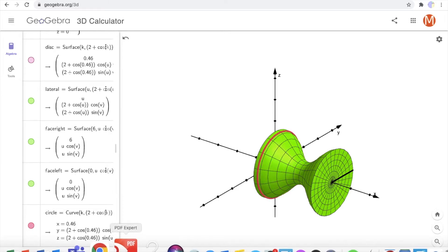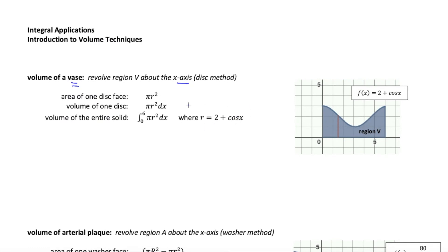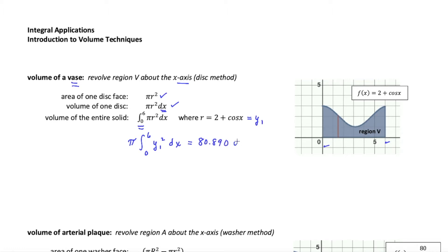Going back to the two-dimensional region, let's set up an integral for its volume. Here is one circular face, and when you give that face some thickness with dx, you have the volume of one disk. Integrating adds up all those volumes — there's an infinite supply of these infinitely thin disks. So we're integrating pi r squared dx from zero out to six. On a calculator, I'd factor out pi and put the function into y1, so the integral becomes pi times y1 squared dx. You should get a volume of 80.890 cubic units.